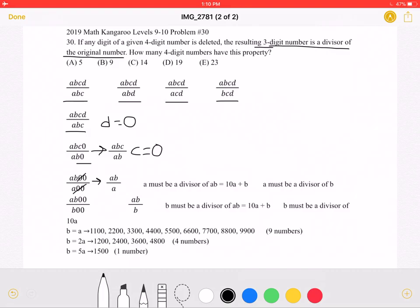This means that A must be a divisor of AB. And we can write AB as being equal to 10A plus B. So this means that A must go into both 10A, which obviously it does, and A must also be a divisor of B.